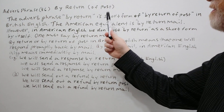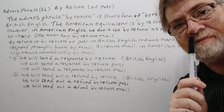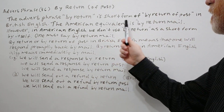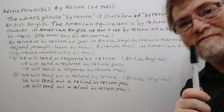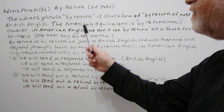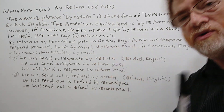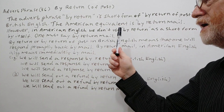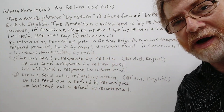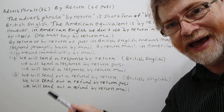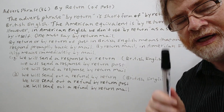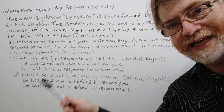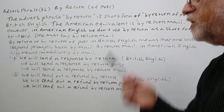The adverb phrase 'by return' is a short form of 'by return of post' in British English. The American equivalent is 'by return mail.' However, in American English we don't use 'by return' as a short form by itself — one must say 'by return mail.' This is probably where a lot of confusion can come in, especially for a student of English as a second language, because they may not realize there's a difference between these two.